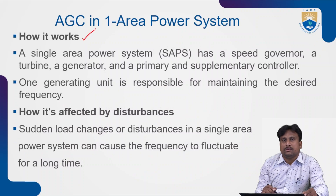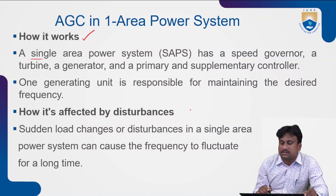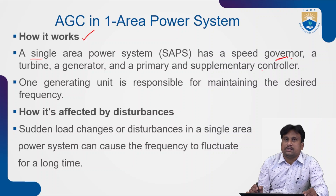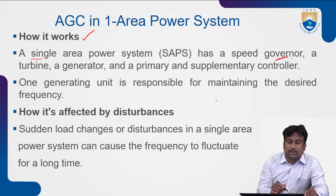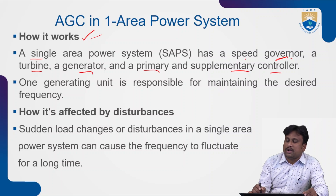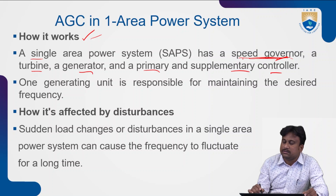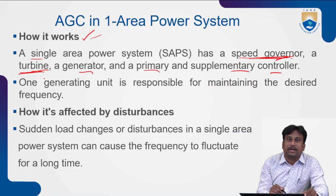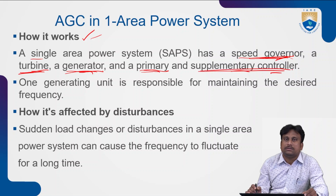How does AGC work for a single area power system network? A single area power system network has a speed governor mechanism — which we already discussed — along with a turbine, generator, and primary and supplementary controllers interconnected together. For a given single area power system network, these blocks are connected: speed governor, turbine component, generator, followed by primary and supplementary controllers. This describes the working operation when connected by an AGC system.